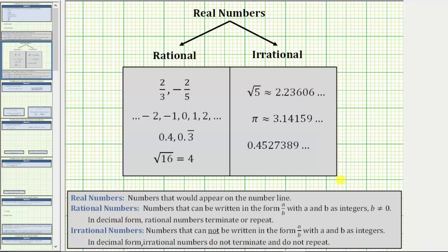Looking at the notes above, for the examples of rational numbers, notice here we have two fractions that fit the form of a over b, with a and b as integers. Here we have the set of integers, which are rational because they can be written in the form of a over b where the denominator would be one. In decimal form, 0.4 is a terminating decimal, or a decimal that stops. 0.3 with a bar over the three indicates the three repeats, and therefore it's rational.